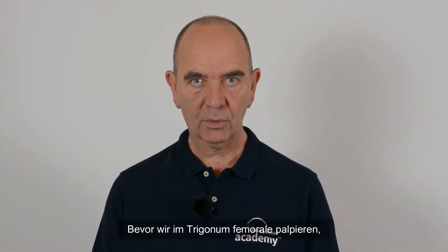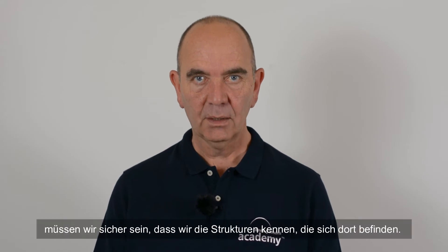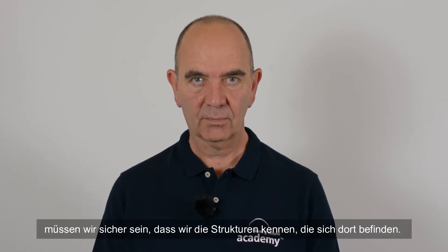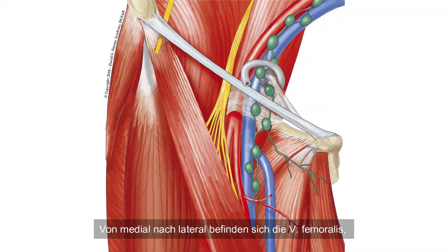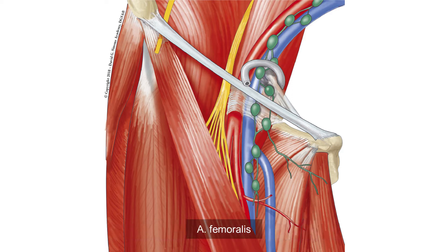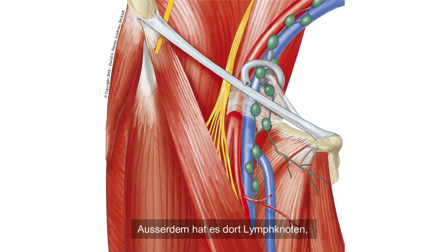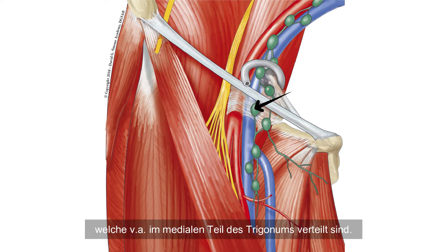Before we palpate in the femoral triangle we have to know the structures there. From medial to lateral are the femoral vein, artery, and nerve. In addition we will find lymph nodes which are scattered mainly at the medial part of the triangle.